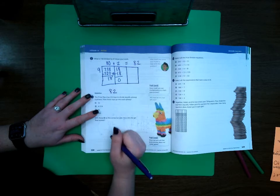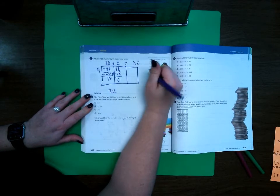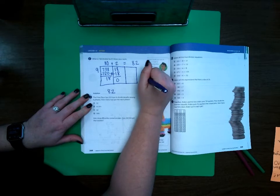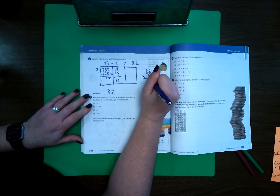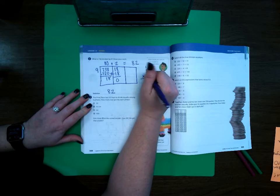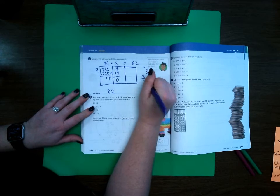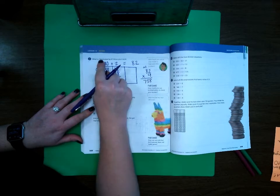Again I can check my answer by doing 82 times 9. 9 times 2 is 18, 9 times 8 is 72 plus one more is 73. 738 is what I had.